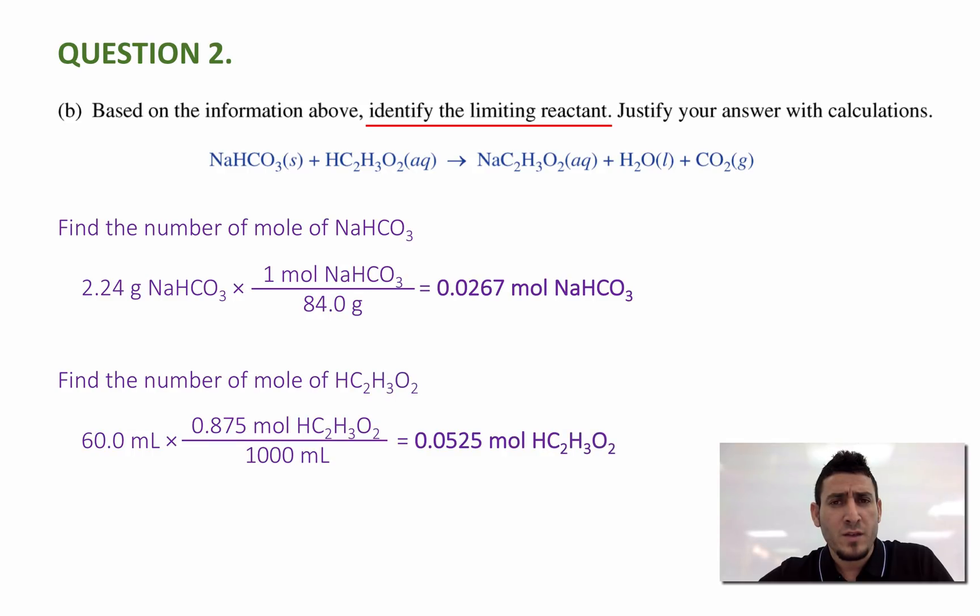Now in a similar way, I can find the number of mole of acetic acid from the volume and the concentration. So I have 60.0 milliliter multiplied by the concentration, 0.875 mole per 1000 milliliter. The answer will be 0.0525 mole of acetic acid.